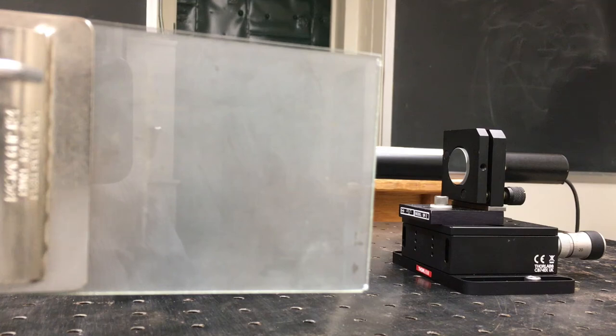Now I've replaced the sodium lamp with a white light source and set the two arms of the interferometer to exactly the same length. Let me turn on the white light source and let's see what we see.